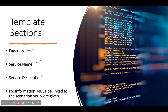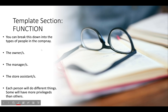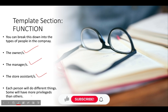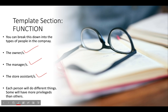The first template section is 'function.' You can break this down into types of people in the company. For a store, the owner is one person, the manager is another, and there are store assistants. Each person will have different privileges — the owner can give a 99% discount, the manager maybe 50%, and the assistant maybe a maximum of 20%. The scenario will give you all the information you need about what each role does.